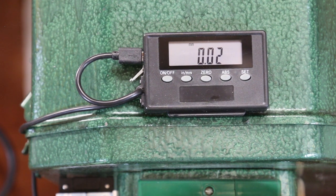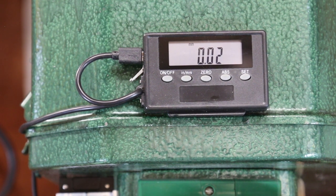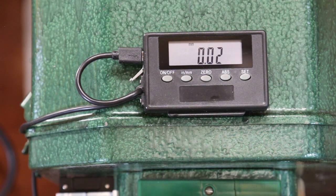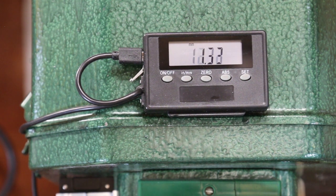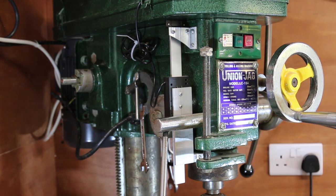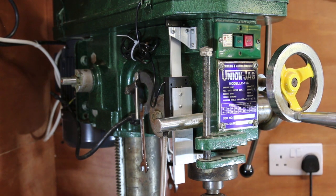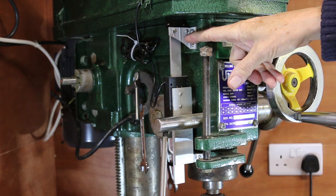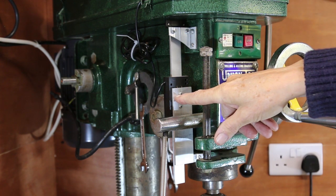The other modification I have made is a digital readout for the z-axis. These units are quite cheap and work very well. There is a scale mounted to the fixed part and a moving slide.